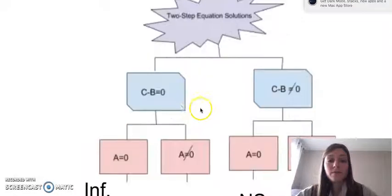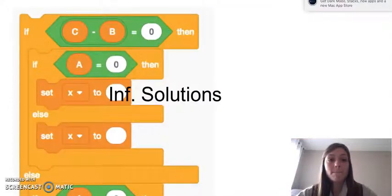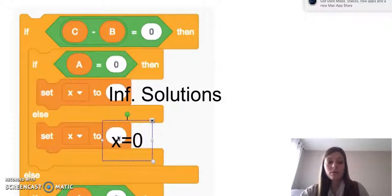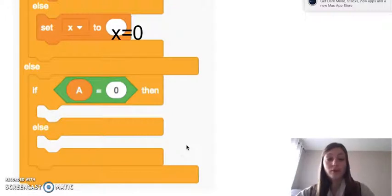Continuing the pattern, if C minus B equals zero, but A does not equal zero, we saw X was going to equal zero. And we could continue down filling this in. So this is the piece that really has some value doing with your students.